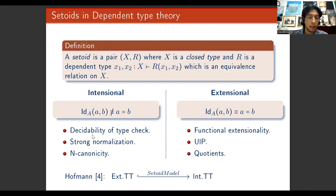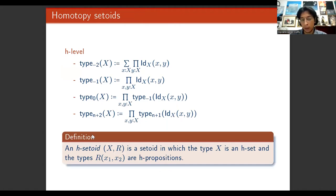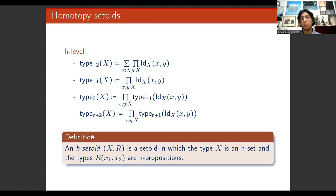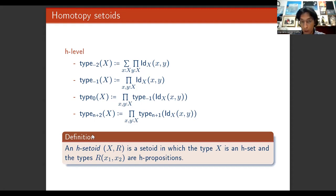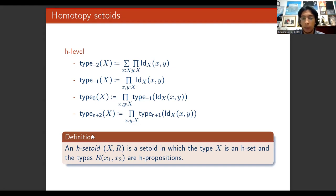What we did was to study a particular class of setoids that we have called homotopy setoids or H-setoids, because we took into account some ideas from homotopy type theory. In this system, a type should be thought of as a space, and hence we can talk about the homotopy level of a type. We focus on two homotopy levels: homotopy level minus 1, also called H-propositions, and homotopy level zero, also called H-sets.